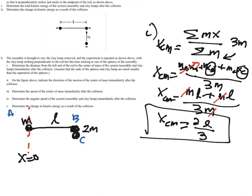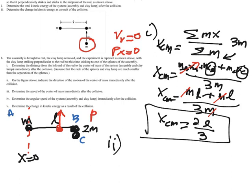In the second part we want to know the direction of motion of the center of mass directly after the collision. Because momentum is conserved and there's no outside force, the center of mass has to be moving in the same initial direction as our original clay mass. We know that initially p_x = 0, so at the end, for our center of mass, p_x still has to be zero.